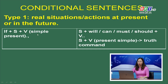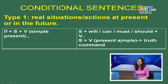Vậy, đây là công thức đầy đủ của câu điều kiện loại 1: mệnh đề if luôn dùng thì hiện tại đơn; mệnh đề chính dùng tương lai đơn hoặc động từ khiếm khuyết ở hiện tại tùy vào nghĩa, hoặc thì hiện tại đơn khi nói về sự thật hiển nhiên, hoặc là một lời yêu cầu. Các em ghi chú vào.